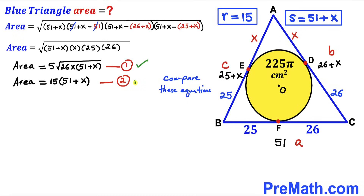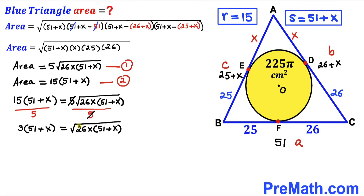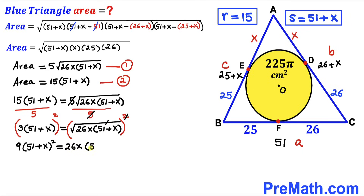Since both equations represent the area of the blue triangle, we equate the right-hand sides. Dividing both sides by 5, and then squaring both sides to undo the square root, we get 9(51 + x)² = 26 × x × (51 + x).